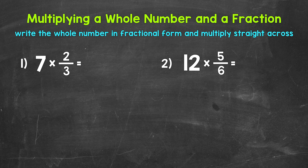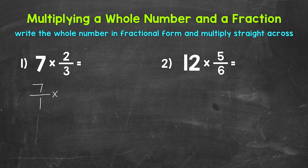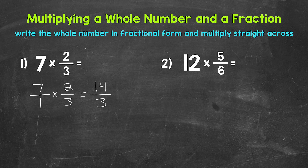Let's write 7 in fractional form. To write a whole number in fractional form, all we need to do is put it over 1. We're not changing the value — 7 over 1 still has a value of 7. Then we have times 2 thirds. Now we can multiply straight across. Starting with the numerators: 7 times 2 is 14. For the denominators: 1 times 3 is 3. So we get 14 thirds, which is an improper fraction.